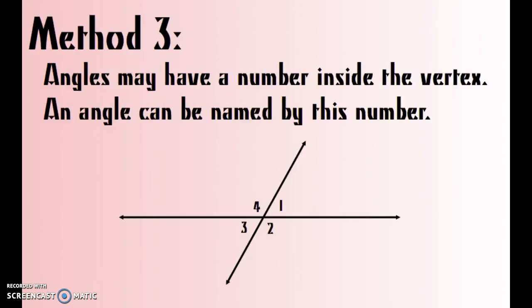Okay, the last method is naming an angle by a number. Sometimes there's a tiny number inside the vertex. An angle can be named by this number, so it is okay to call, for example, this angle right here. You could just name it angle 1.